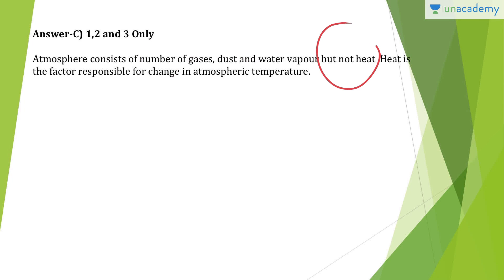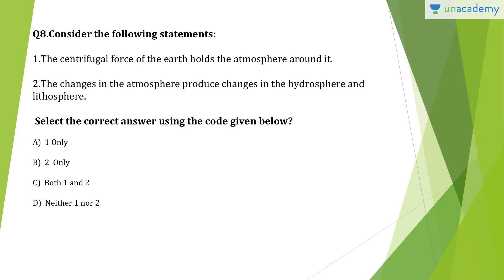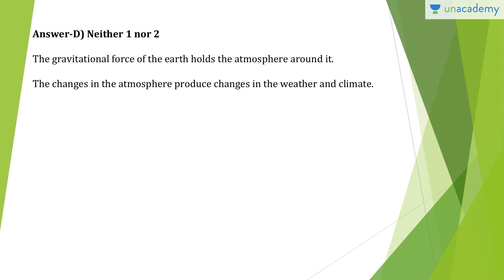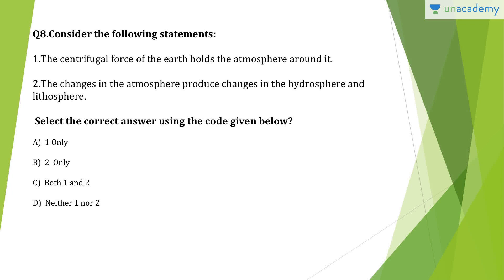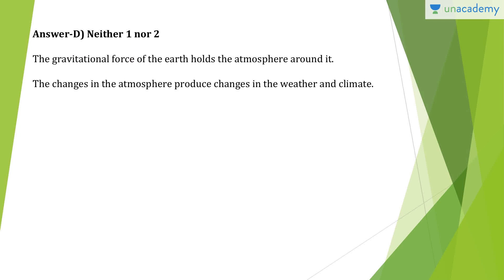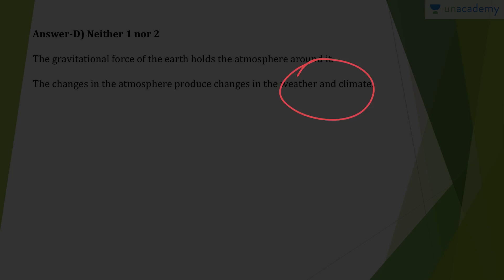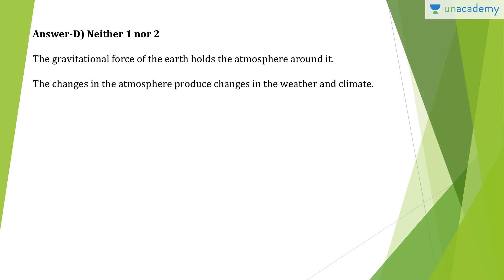Question 9: Biosphere is the narrow zone of the earth where hydrosphere, lithosphere, and atmosphere interact with each other — yes. All plants, animals, and human beings are elements of biosphere — yes. Answer is C, both one and two. Bio means life, sphere means part. Any part of the earth where life is possible is called the biosphere. It is the narrow zone where land, water, and air interact to support life. Question 10: Ecosystem is formed by the interaction of all living organisms with each other and with physical and chemical factors of the environment. Answer is C, both one and two — both statements are correct.